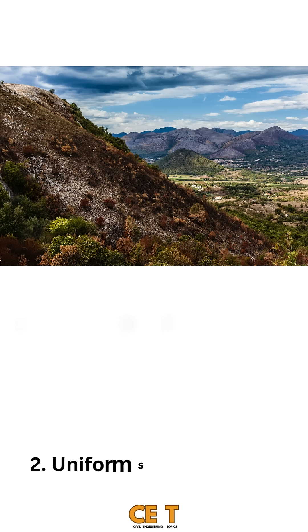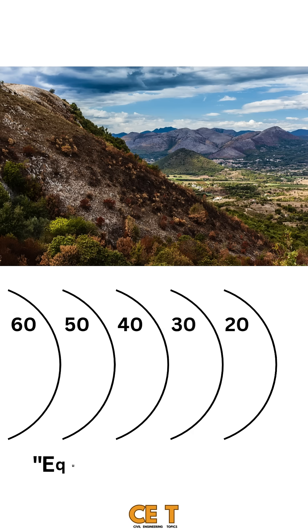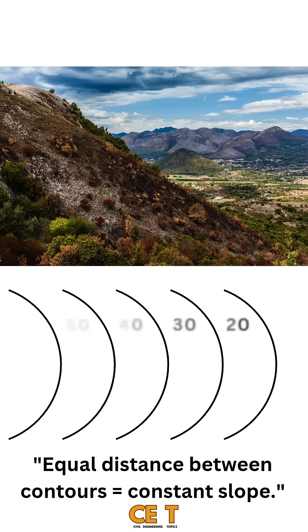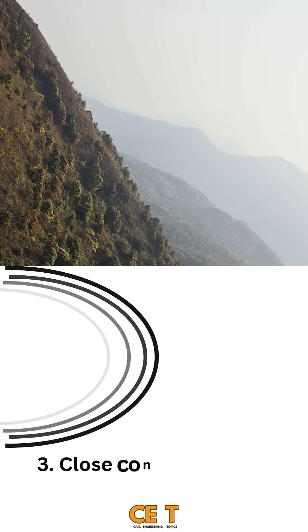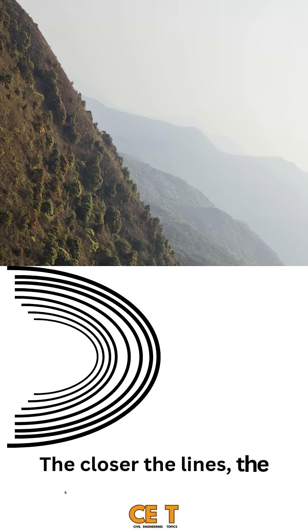2. Uniform spacing means uniform slope — equal distance between contours equals constant slope. 3. Close contours equal steep slope. The closer the lines, the steeper the terrain.